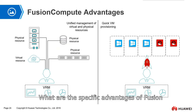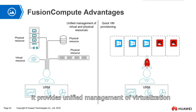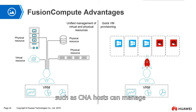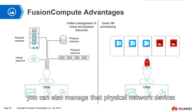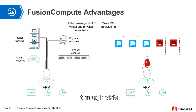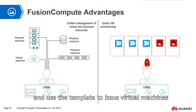What are the specific advantages of Fusion Compute? First, it provides unified management of virtualization and physical resources. It can manage physical computing resources such as CNA hosts, manage physical storage resources by adding storage devices, and manage physical network devices, as well as the virtual resources formed by these physical resources. Second, through VRM, we can quickly deploy virtual machines, clone virtual machines, and use templates to issue virtual machines.